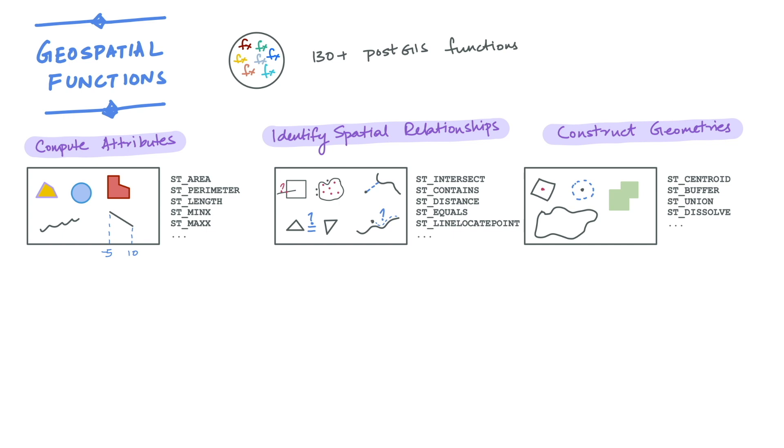To summarize, geospatial functions in Kinetica can be broadly classified into three groups: the first computes spatial attributes like area and length,